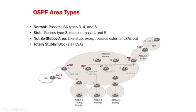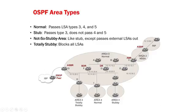Next, we have a not-so-stubby area, which is a special case. It works exactly like a stub — it can have summary routes and a default gateway, but it cannot have regular routes. Normally, a stub area is not allowed to have external routes or routes from an ASBR. A not-so-stubby is the special case where you do have an ASBR or a router doing redistribution. It makes a special kind of LSA called a Type 7. It takes those external Type 7s and passes them to the ABR, which converts them into a Type 5 LSA — a regular external LSA — and passes them into the backbone.